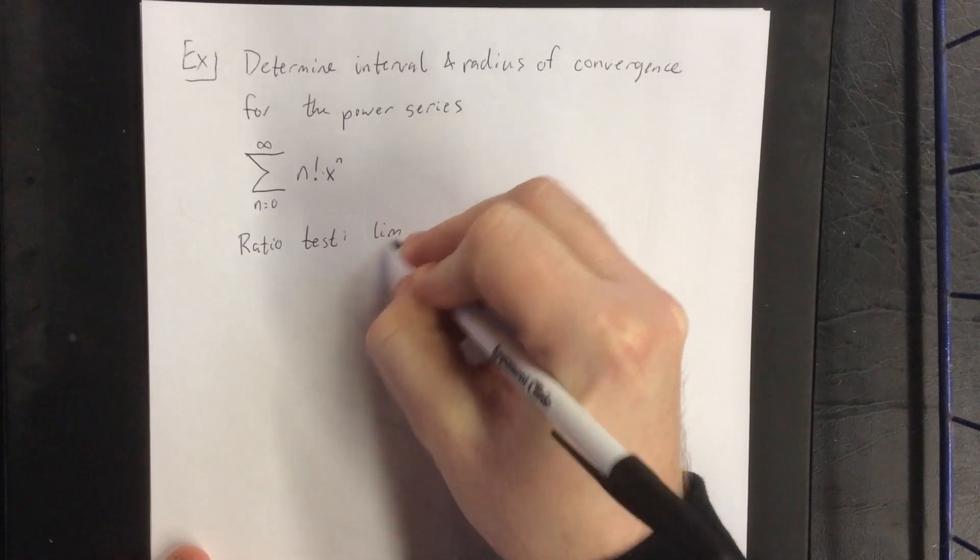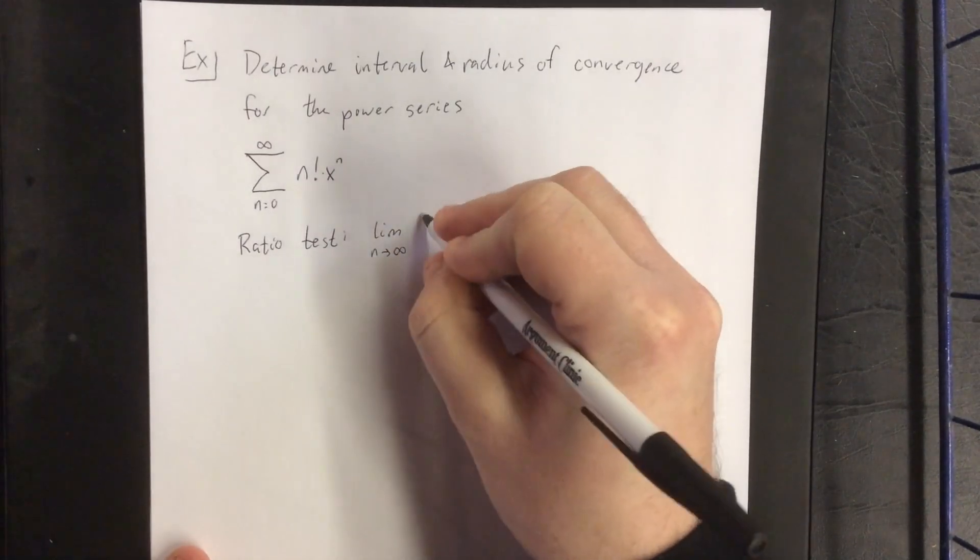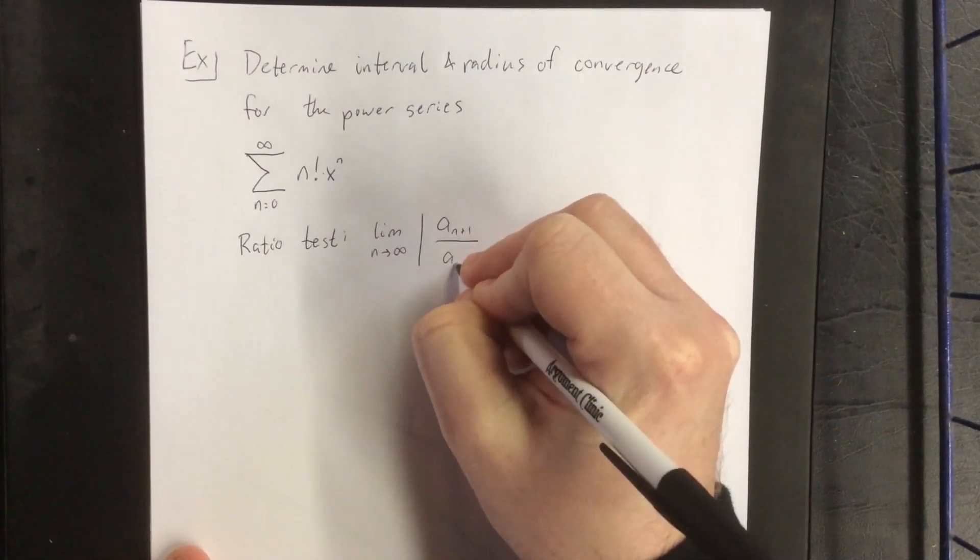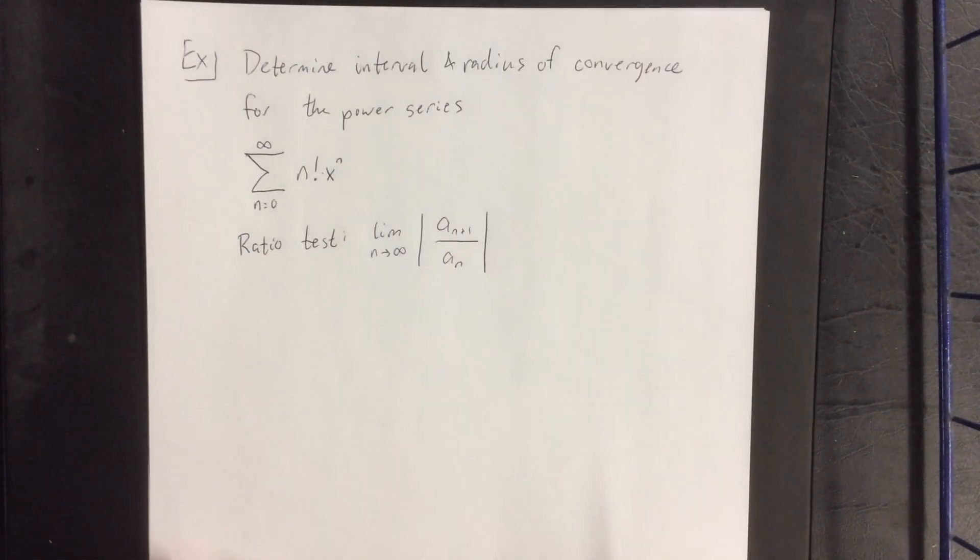So ratio test says to set up the limit as n goes to infinity of the absolute value of the n plus 1th term divided by the nth term.